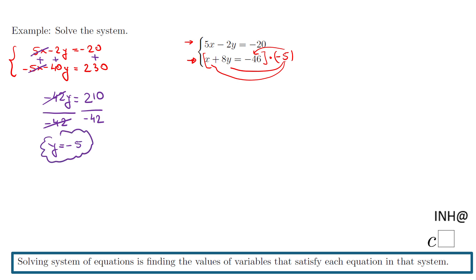How do we find the x value? For the x value, you can take any of these two equations. I think I will take the second one and plug that y equals negative 5 into that equation. So I'm going to have x plus 8y, 8 times negative 5, equals negative 46. And I have here x minus 8 times 5, 40, equals negative 46. And the last step is to add 40. And we finish. We have x equals negative 6.